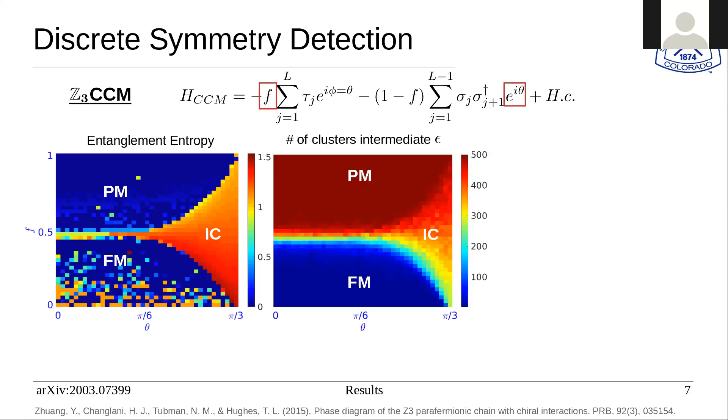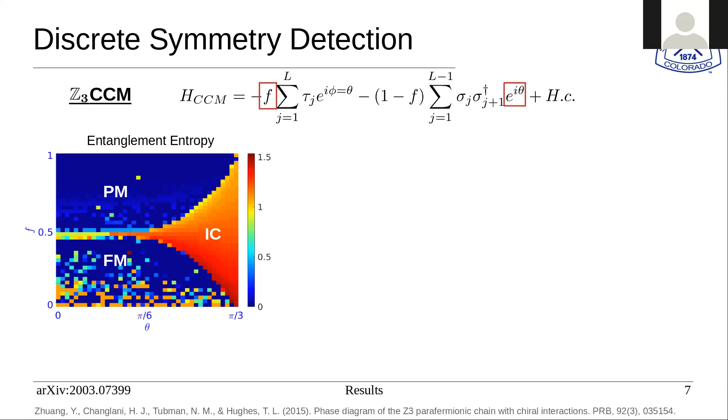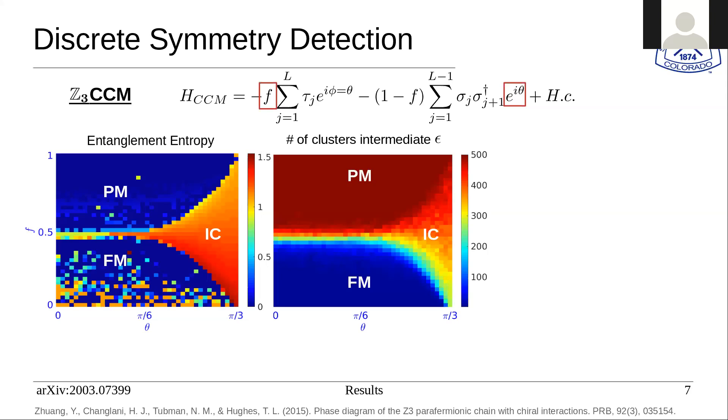When you use entanglement entropy, you get this whole phase diagram, but entanglement entropy is very difficult to attain experimentally. But when you use the diffusion map on just sample data, you also elucidate the full phase diagram, and you actually elucidate it or generate it far cleaner. And interestingly, in this FM phase, the very bottom value of the color bar here is actually three. So it also elucidates the Z3 symmetric phase, and that's the FM phase is Z3 symmetric. It has a degeneracy of three, and it attains this full phase diagram with sample data, unlike the entanglement entropy, which is much more difficult to generate experimentally. That was the number of clusters at intermediate epsilon.